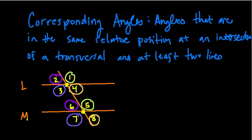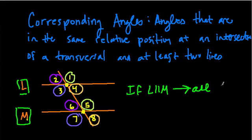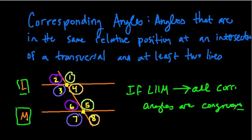Now what's nice is that if L and M are parallel—we might talk about this in other videos—then corresponding angles are all equal. So if L is parallel to M, then all corresponding angles are equal, or we'd say congruent. Congruent means equal but in a different actual position.